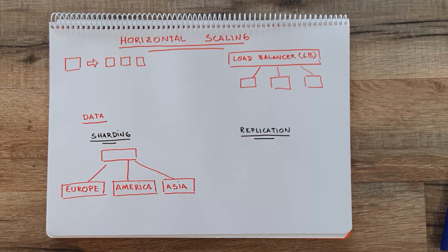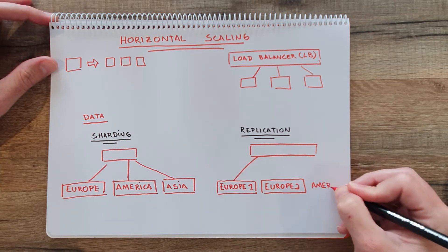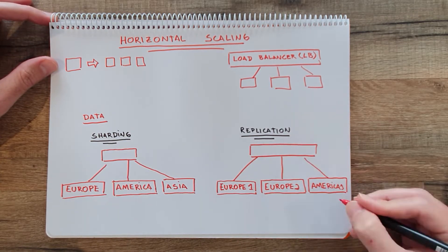Another thing we can do with the data is replication, where we have multiple copies of the data on different servers. Replication is very useful for read-intensive applications. If you can replicate the data between different nodes and you know you're going to read more than write, you can use those nodes for reads and use eventual consistency to update them.